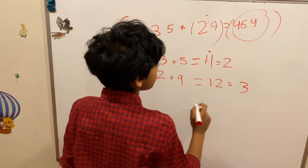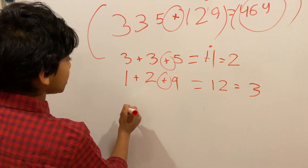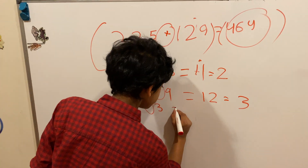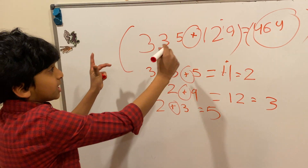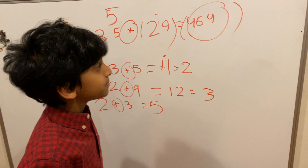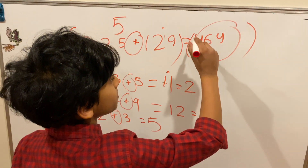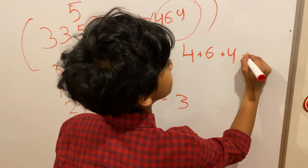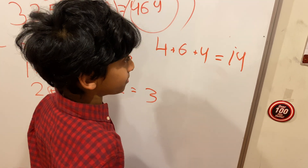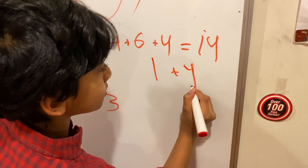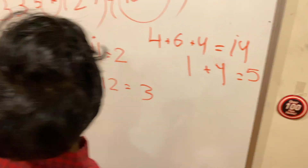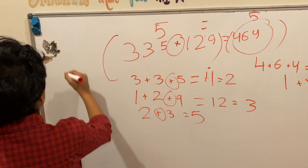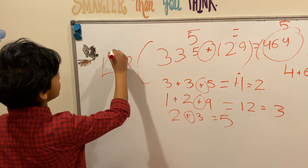So now we have 2 and 3. Since our operation is addition, we do 2 plus 3, which is 5. So the left hand side's answer is 5. Now let's go to the right hand side: 464. So 4 plus 6 plus 4 equals 14. Let's make 14 into a single digit number: 1 plus 4 which equals 5. Now let's check — 5 is equal to 5, so left is equal to right. The answer is correct.